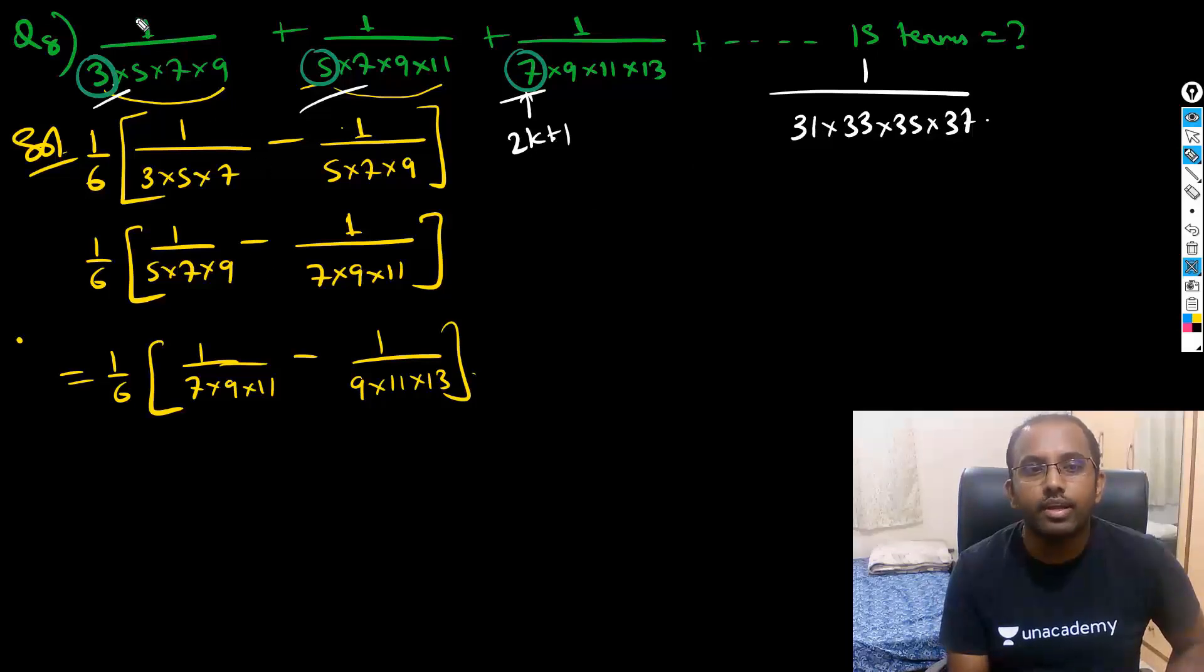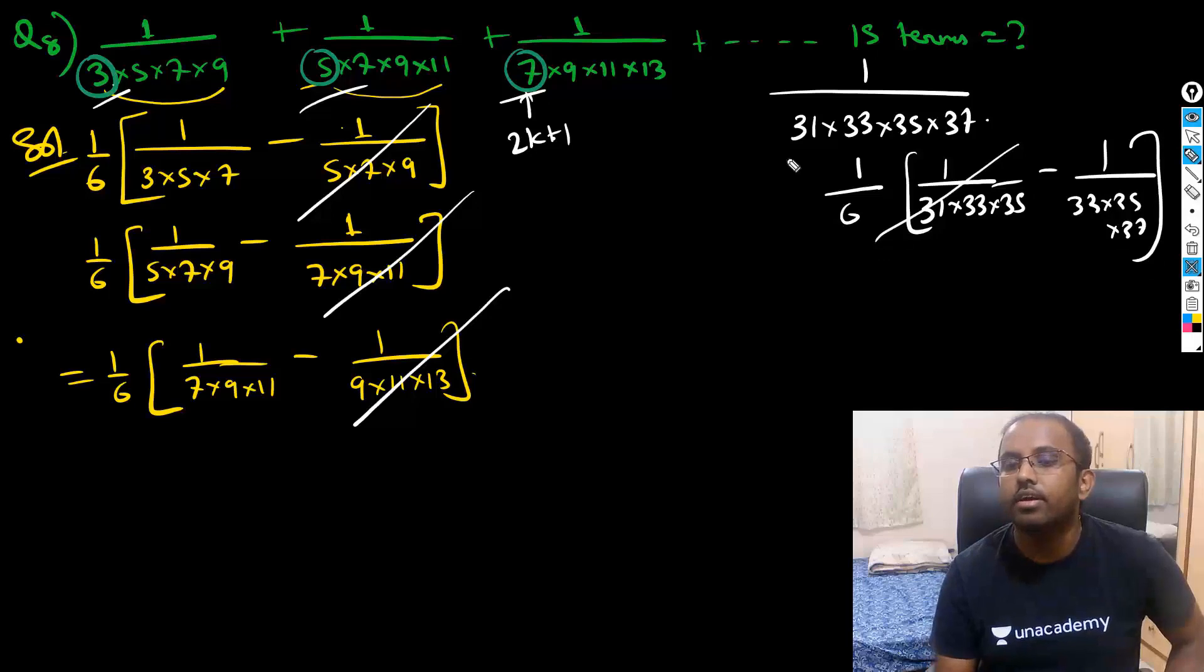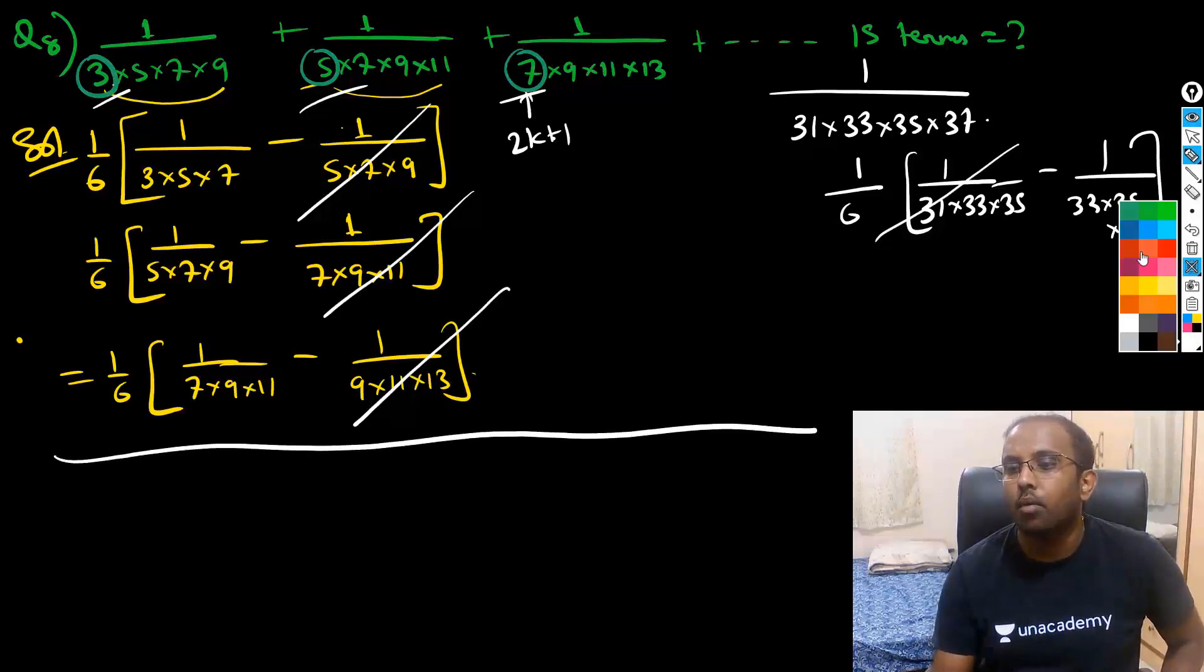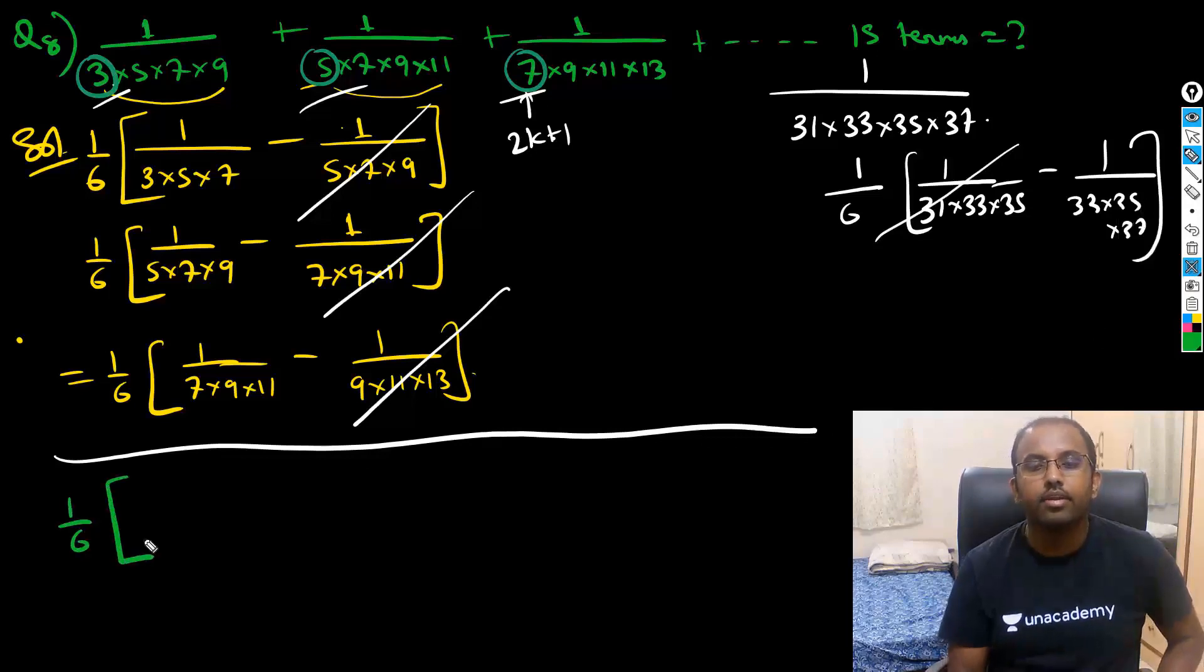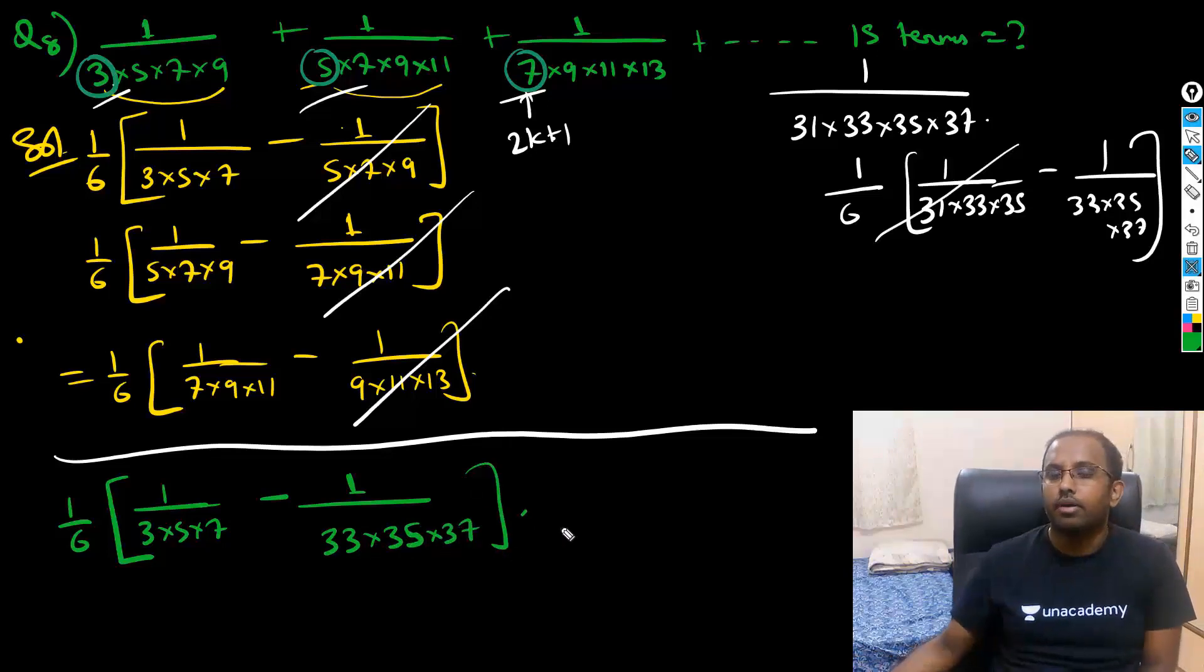Now these values will get cancelled. So basically all these terms will get cancelled after adding. So ultimately what I'm left with is 1/6 times 1/6 times [1/(3×5×7) minus 1/(33×35×37)]. That's ultimately the last part left. So I hope all of you got this right - how to break this kind of questions.